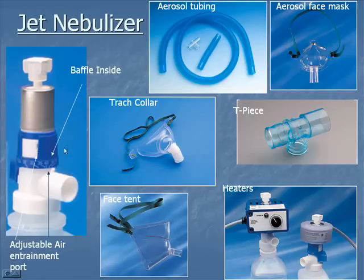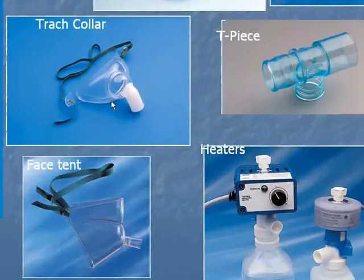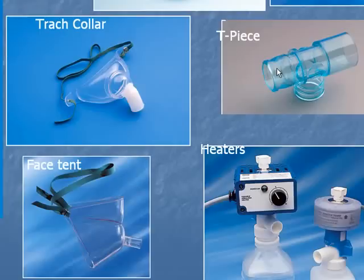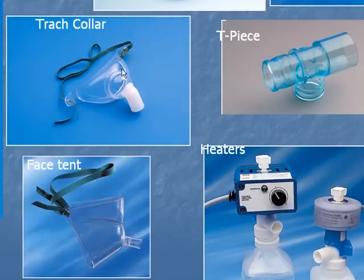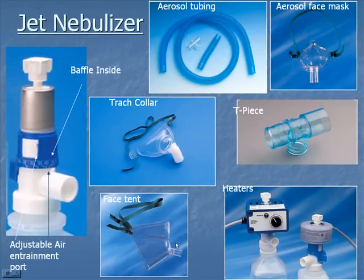You can deliver the jet nebulizer output via aerosol mask, trach collar, T-piece hooked to a trach, or a face tent. A T-piece is a weaning modality — you hook the jet nebulizer right to the end of the endotracheal tube. If they have a permanent trach, the trach collar is employed for longer duration use. The face tent is useful for somebody with facial injuries, a broken jaw, or post-op surgery who needs some humidity and some oxygen but doesn't need an accurate FiO2.